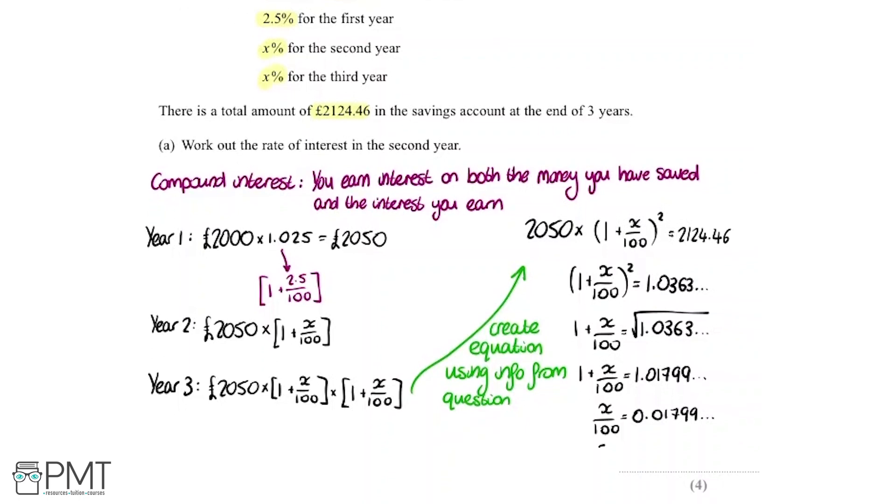Multiplying both sides by 100, we get that x equals 1.799 dot dot dot, which equals 1.8 if we round to one decimal place. And there we've got the answer because the question asks us to work out the interest in the second year and the interest is x percent. So our answer is that the interest in the second year is 1.8 percent.